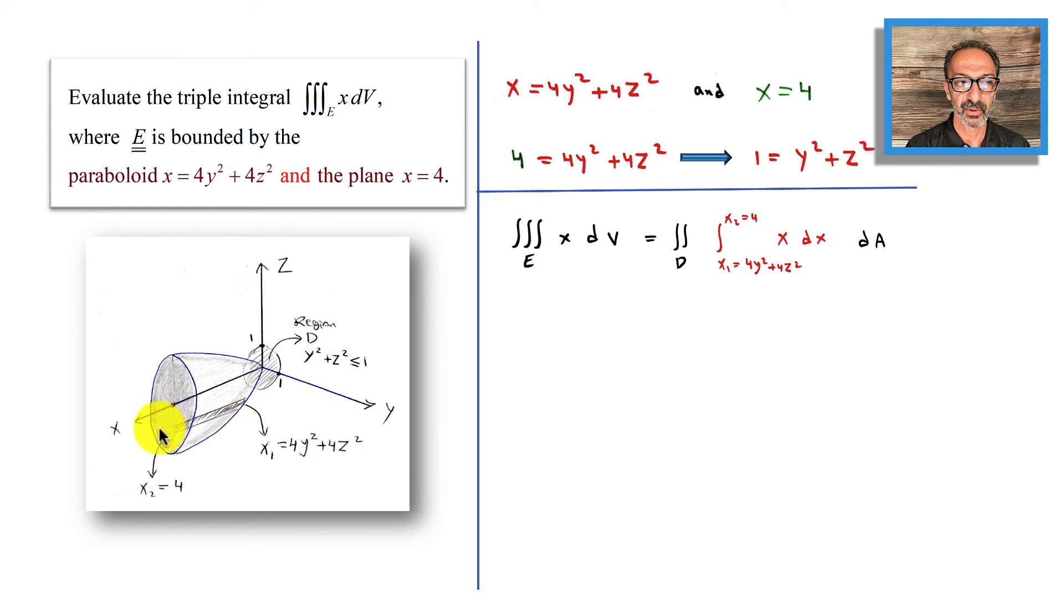The first integral goes from x₁ equals 4y² plus 4z², the lower bound, up to x₂ equals 4, the upper bound.